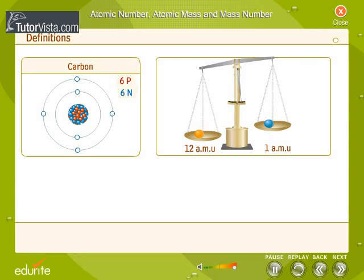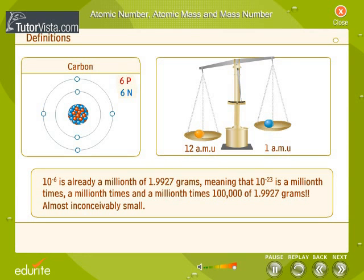In more traditional measurements, the mass of one carbon-12 atom would be 1.9927 × 10⁻²³ grams. Can you imagine how small this number is to express in grams? 10⁻⁶ is already a millionth of 1.9927 grams, meaning that 10⁻²³ is a millionth times a millionth times a millionth times 1 lakh of 1.9927 grams — almost inconceivably small.